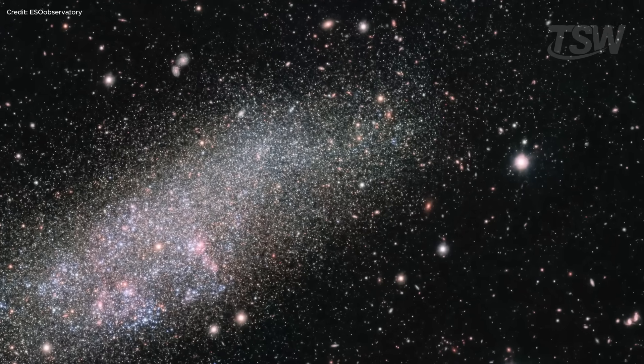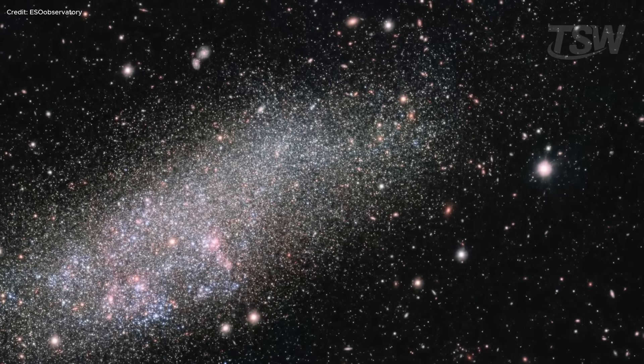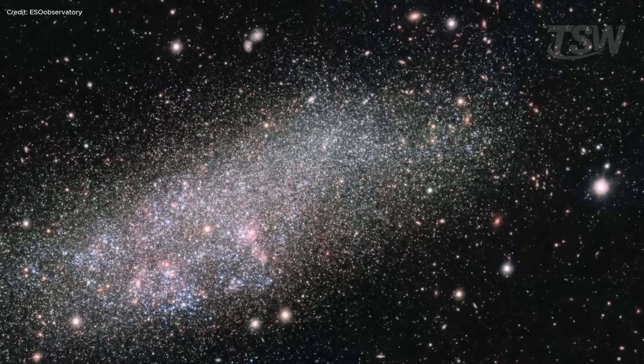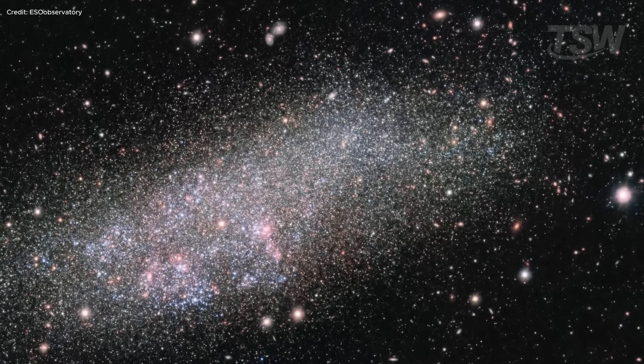Andromeda is just one among dozens of galaxies that make up what's known as the Local Group, a kind of cosmic neighborhood with about 80 nearby galaxies. But this group is part of an even larger structure, the Laniakea Supercluster.